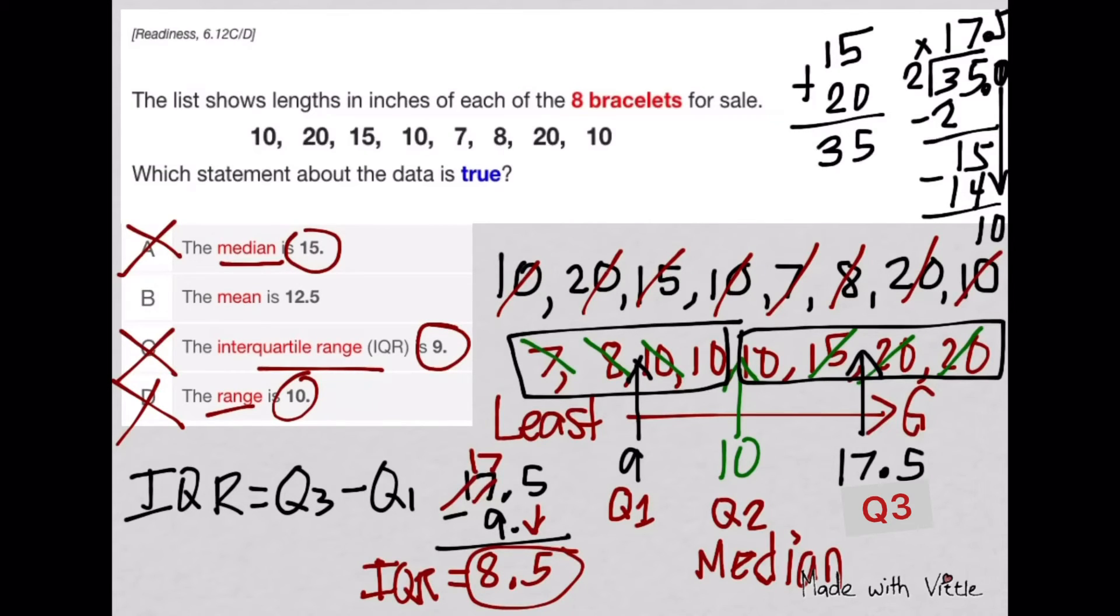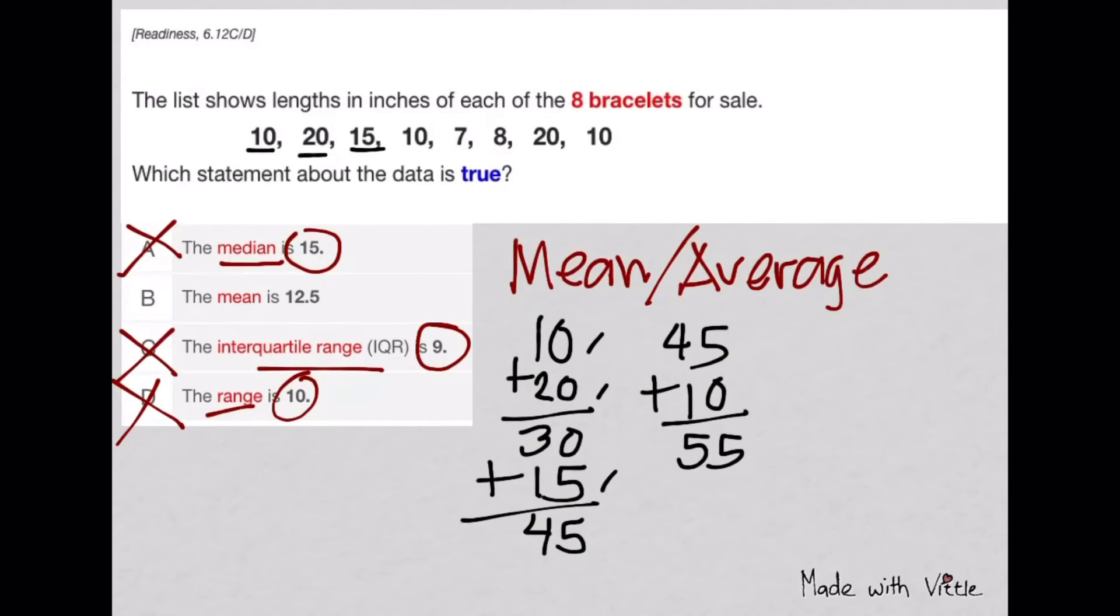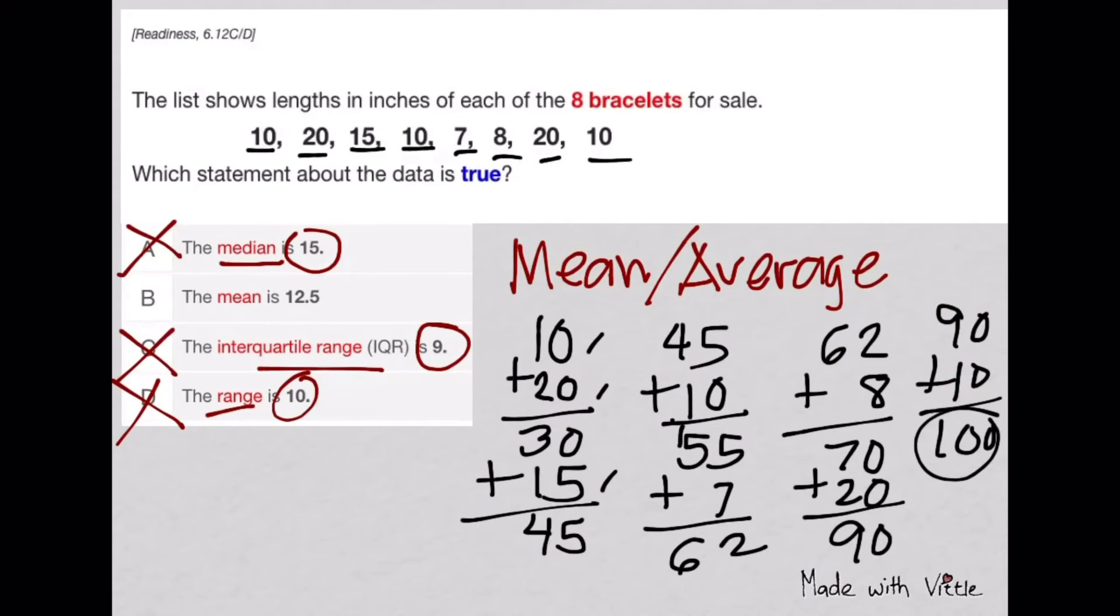But let's go ahead and practice finding the mean or average. First, add everything. After adding everything, divide the sum by how many numbers you have.